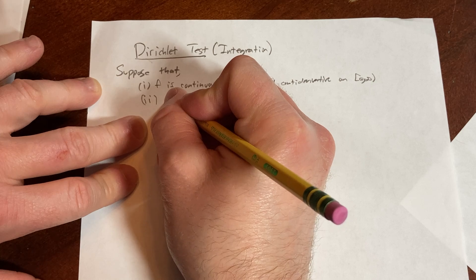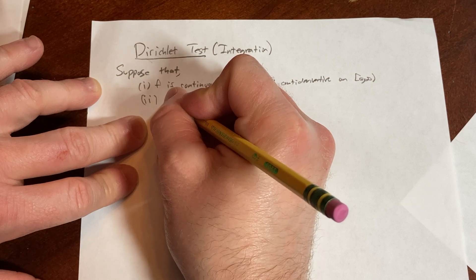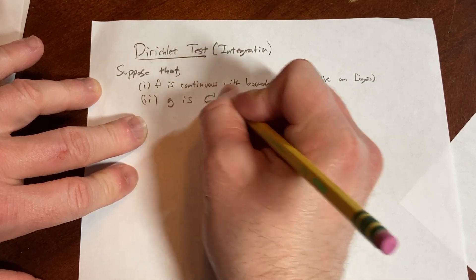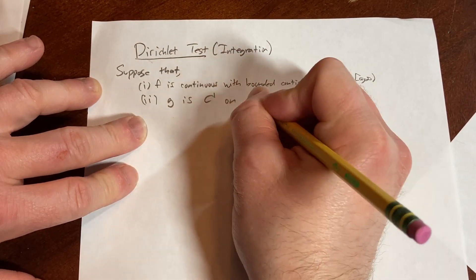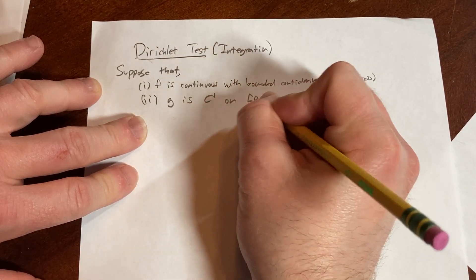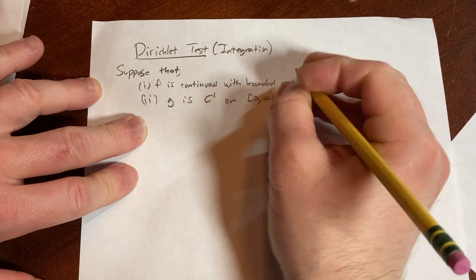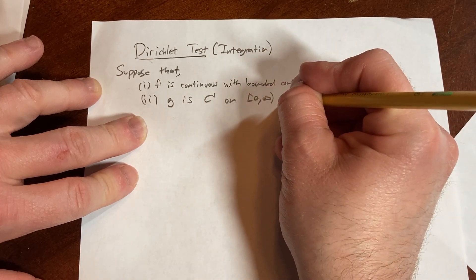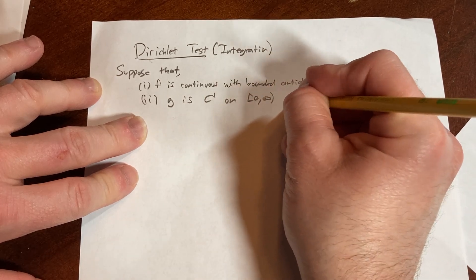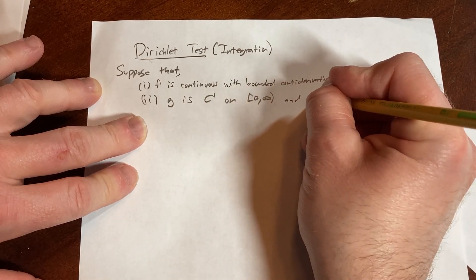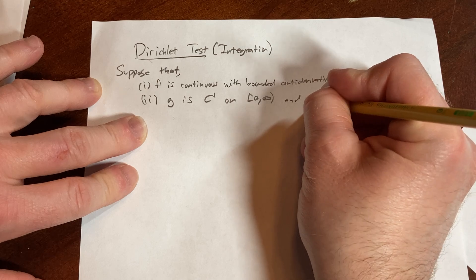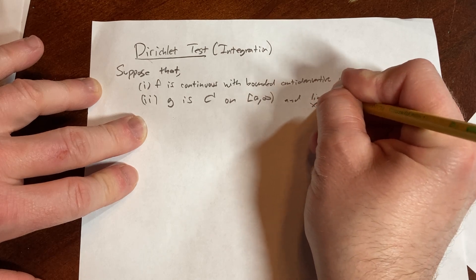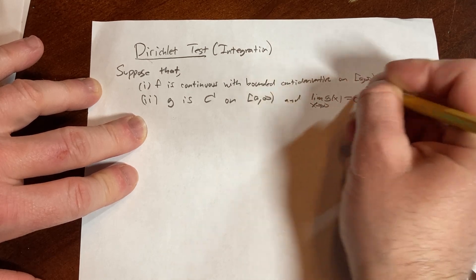2: suppose also that g is C¹ on [a, ∞), and the limit as x approaches infinity of g(x) equals 0.